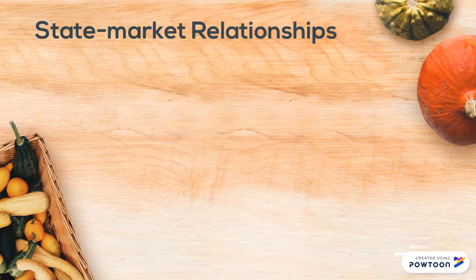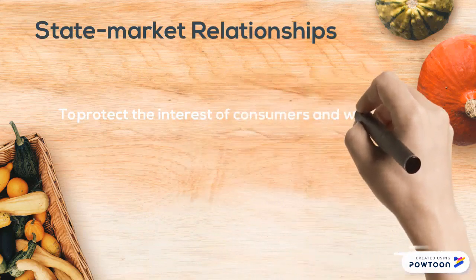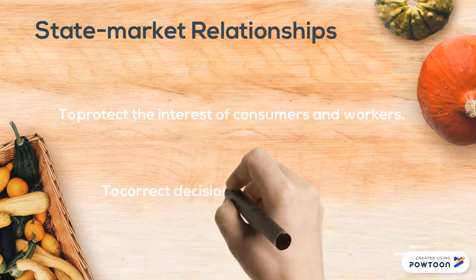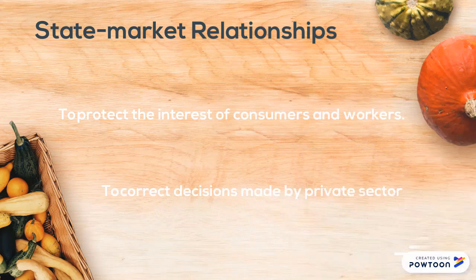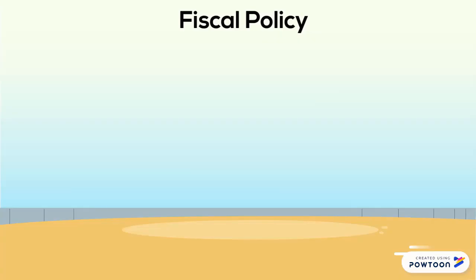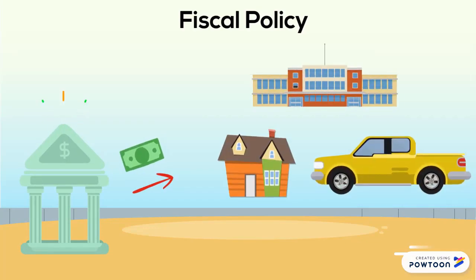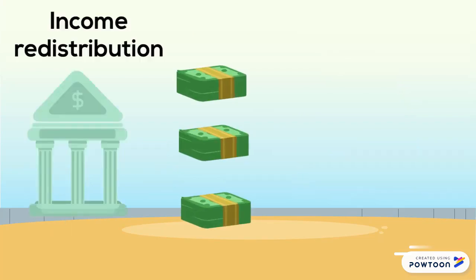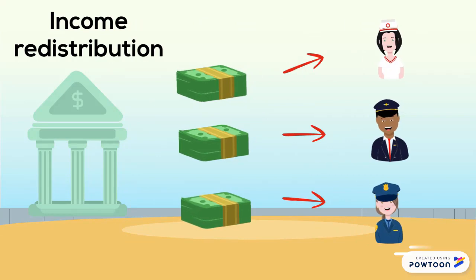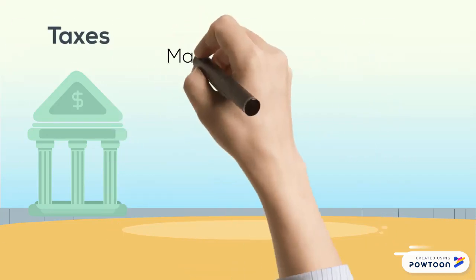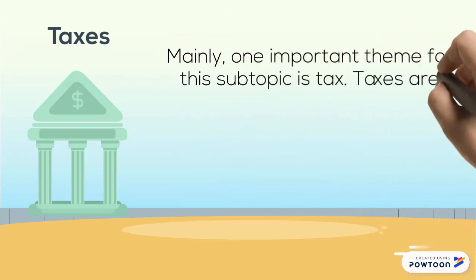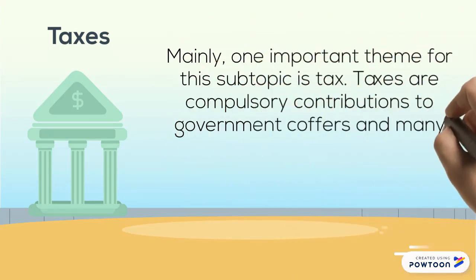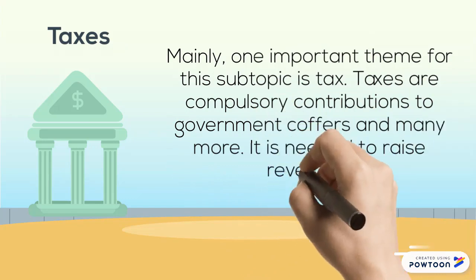State-market relationships exist to protect the interest of consumers and workers and to correct decisions made by the private sector. A key term is fiscal policy, which means governments are encouraged to increase public spending on infrastructures to further spur economic activity. Governments should also correct the imbalance in access to goods through income redistribution. One important theme is taxes — compulsory contributions to government coffers needed to raise revenues.